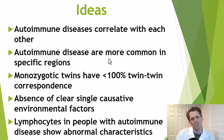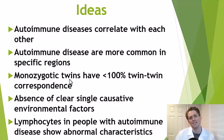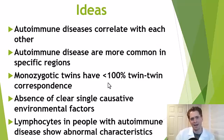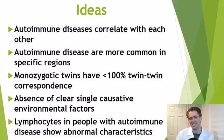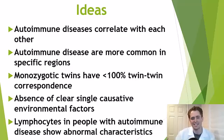Autoimmune diseases are much more common in some areas compared to others, suggesting there could be some environmental factor. Also, even identical twins with the same DNA don't have 100% twin-twin correspondence for these autoimmune diseases. For instance, in someone with MS, the risk of their identical twin also having MS is only about 25%, suggesting there could be environmental or chance factors. People have researched these diseases for years and failed to come up with any single clear causative agent.